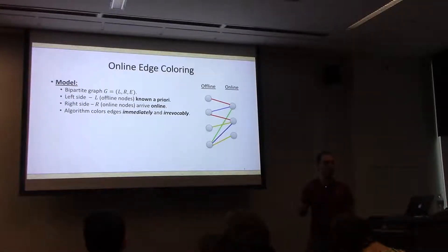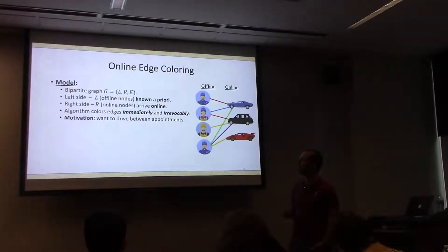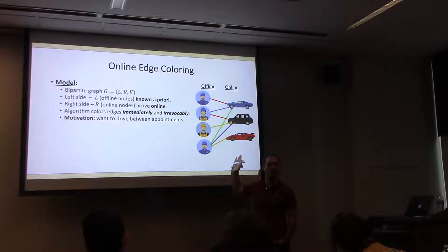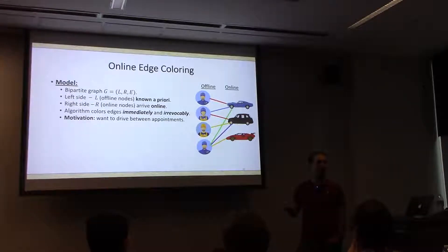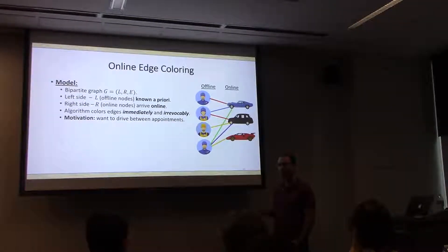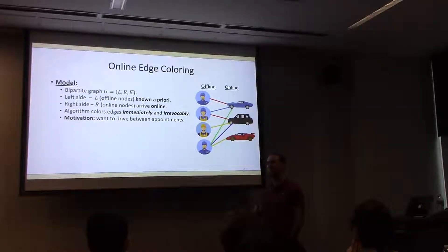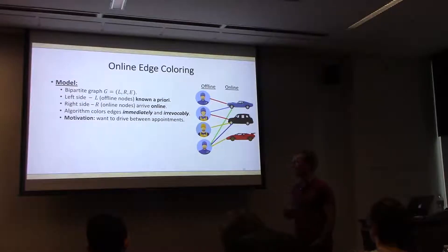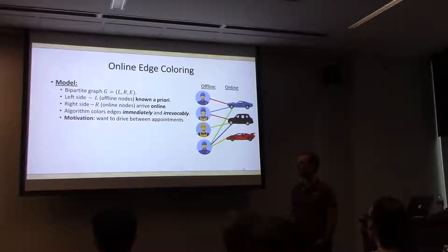Our motivation is the scheduling example we saw earlier: the mechanics are the offline nodes and the cars show up online. Whenever a new car shows up, the driver wants to know immediately in what time slots it can go about its business. I'll be happy to talk about some other slightly less silly applications later.